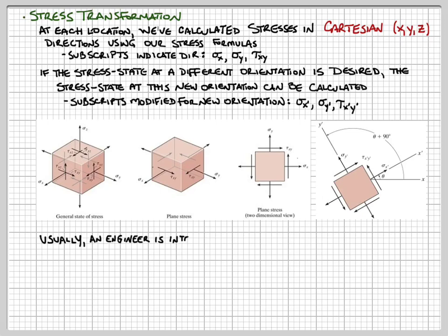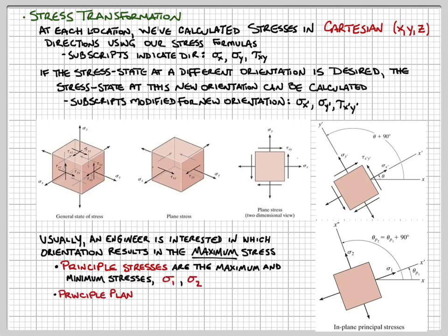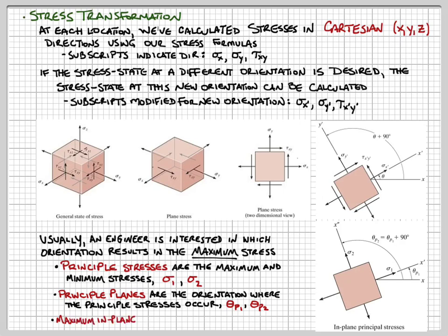An engineer is usually interested in the maximum stresses, so we want to find the orientation where the maximum stress occurs. These are called the principal stresses: sigma 1 is the maximum normal stress and sigma 2 is the minimum normal stress. The orientations at which these occur are called the principal planes. Theta_p1 is the rotation to the direction of sigma 1, and theta_p2 is the rotation to the direction of sigma 2. There is also a maximum in-plane shear stress at a corresponding orientation.